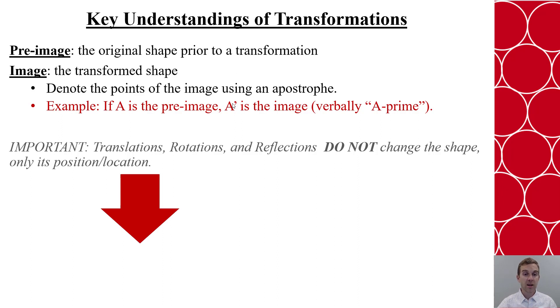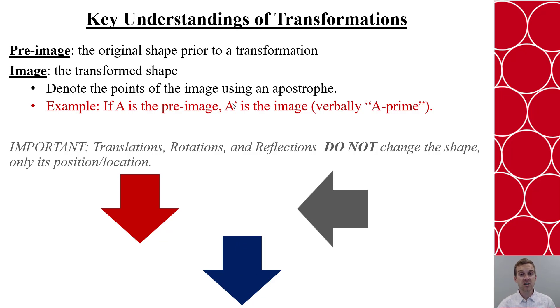So if I had this arrow, and I translate it downward to the right, it is still a congruent arrow that has now been translated. I could also rotate it, and then translate it again, and all three of these arrows are congruent. Because we haven't changed the shape or size, we've only changed the location and position.